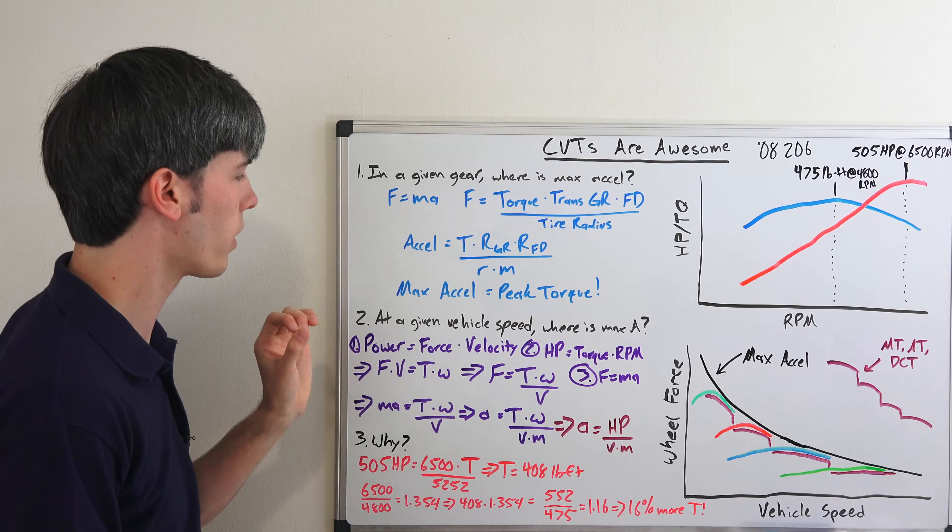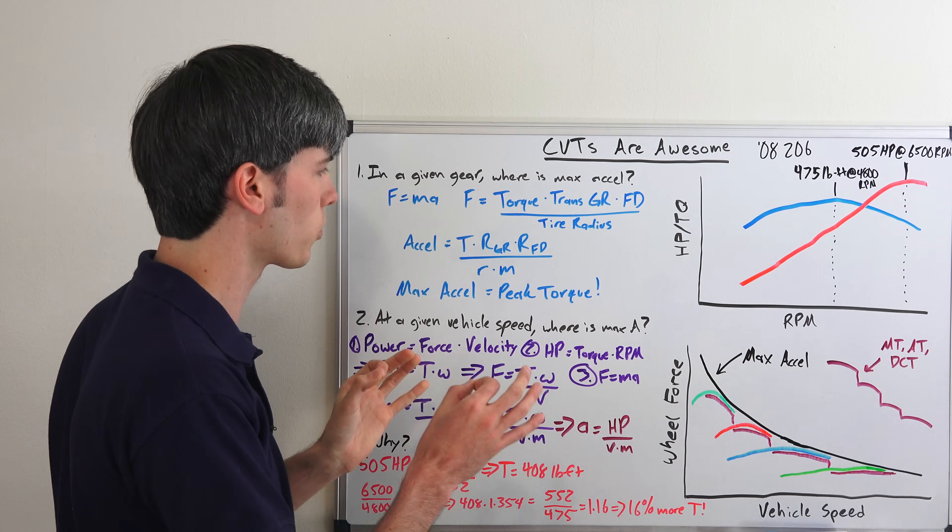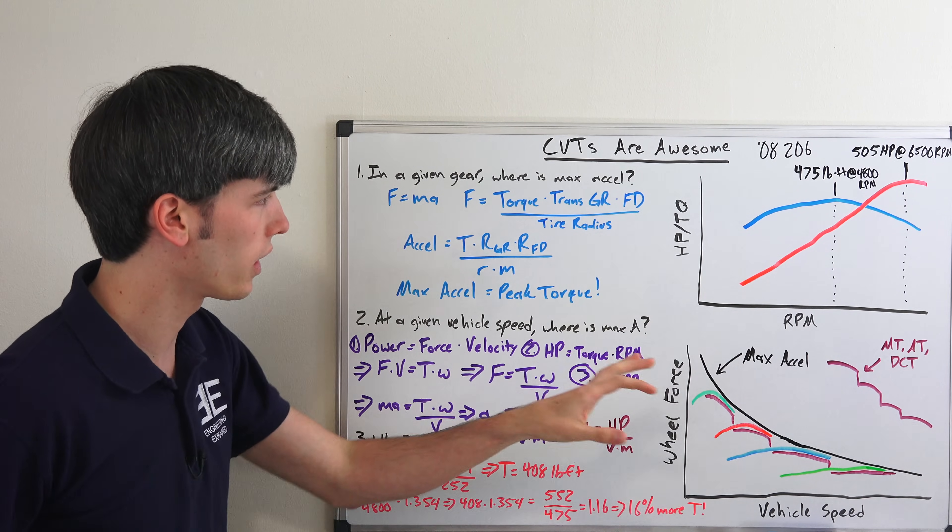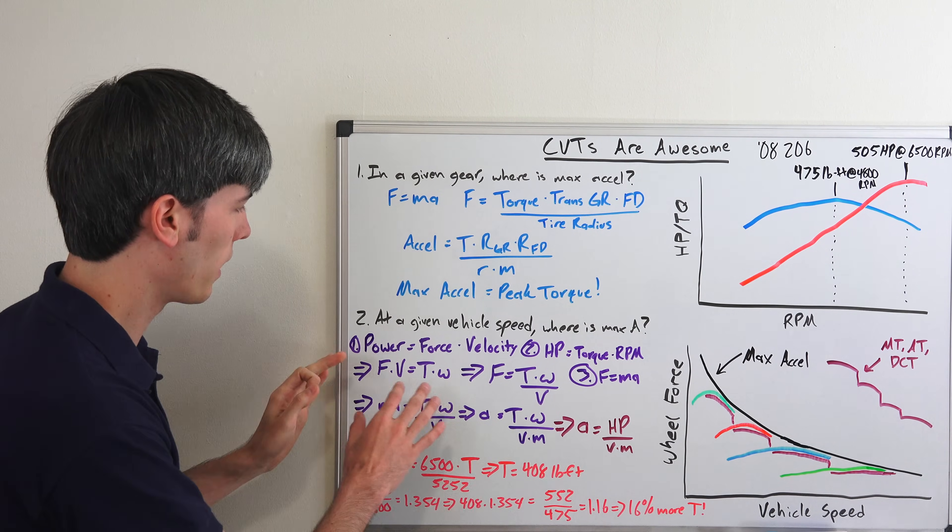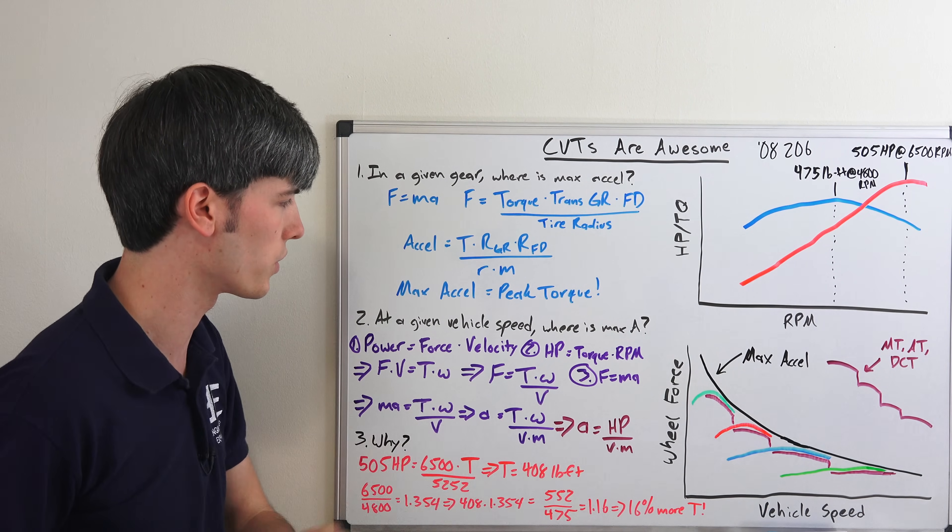But what we want to know is at a given vehicle speed, where is maximum acceleration? Because that's where you want to sit at and we'll explain why. So here's the complicated math portion of this video. We know that power is equal to force times velocity - that's one of our given equations. Another one of our given equations is horsepower is a function of torque and RPM.